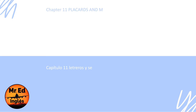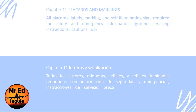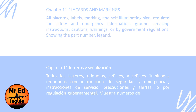Chapter 11: Placards and markings. All placards, labels, markings, and self-illuminating signs required for safety and emergency information, ground servicing instructions, cautions, warnings, or by government regulations, showing the part number, legend, and location.